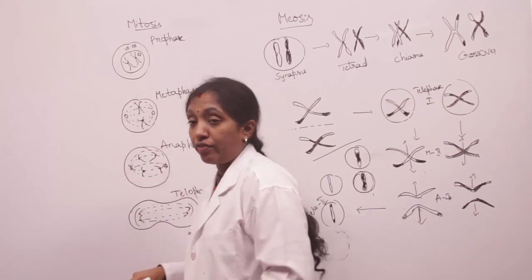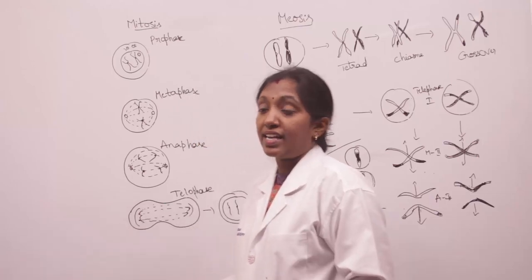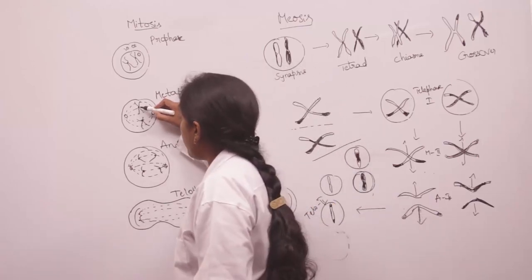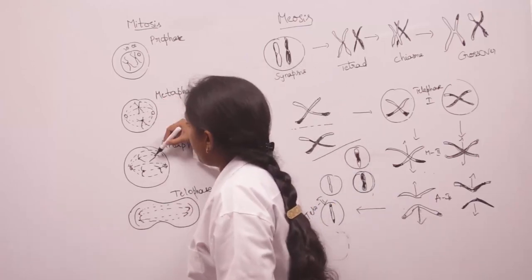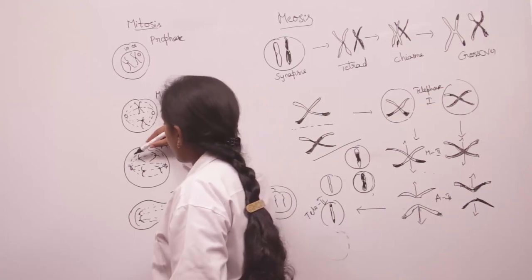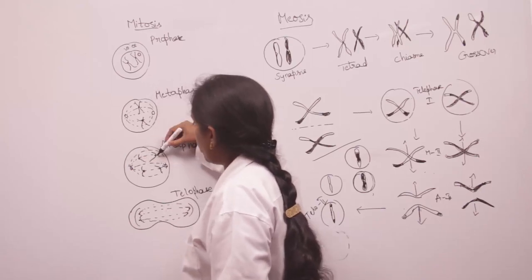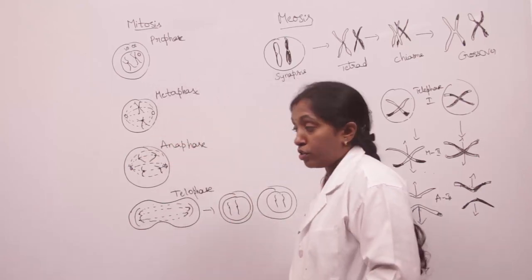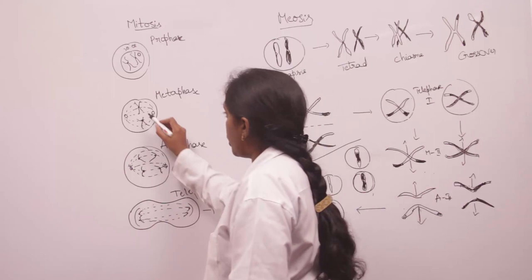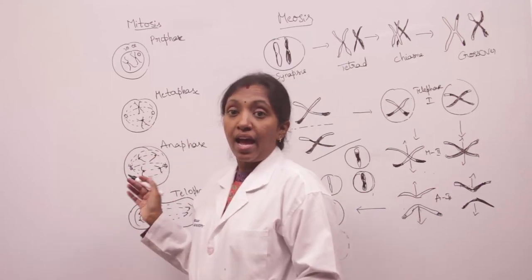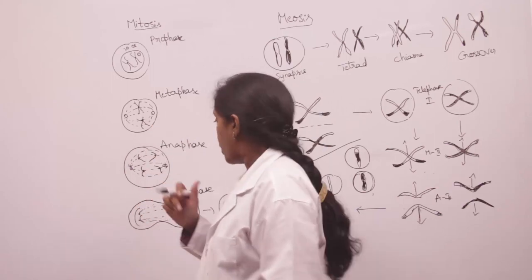Coming to the anaphase, the centromere gets divided into two, taking one sister chromatid to one pole and the other sister chromatid to the opposite pole. So the centromere divides in the anaphase.